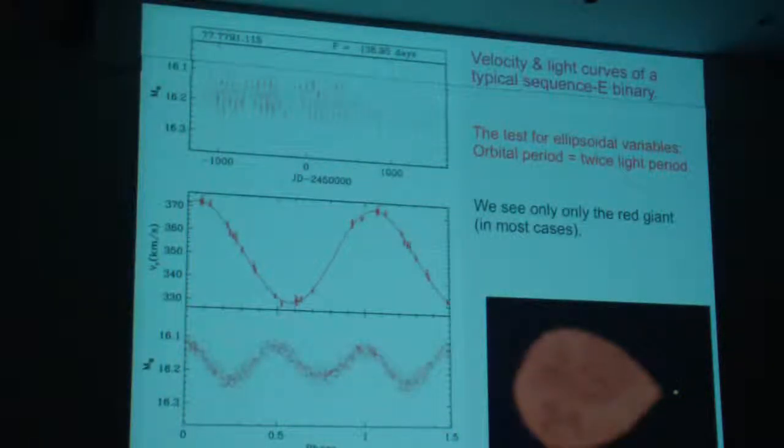And when that's gone through 180 degrees, it would be another maximum. When it's gone through 90 degrees, you'd be looking end on. And so you'll see a minimum apparent area. So that gives you then two minima and two maxima per orbital period. So that's the absolute test. That's how we know that those sequence E stars are in fact ellipsoidal variable red giants.